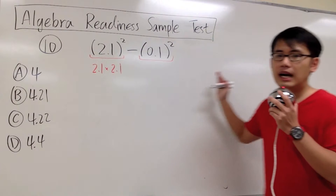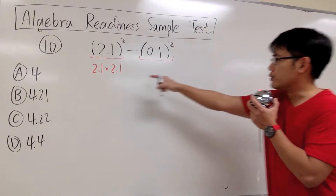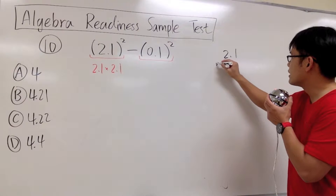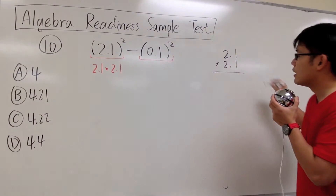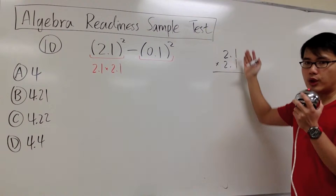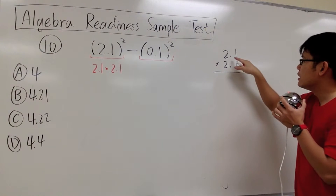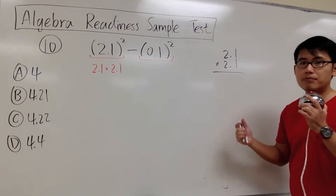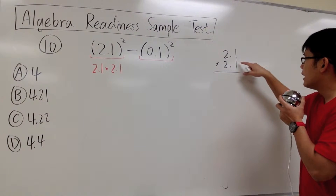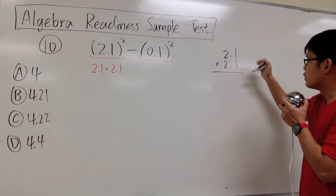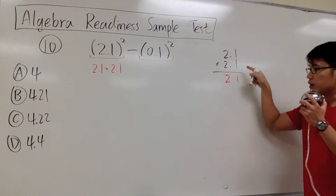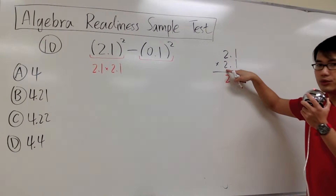Let's work this out on the side. To set this up, I will write it down vertically: 2.1 times 2.1. Technically, I had to line up the numbers all the way to the right — it just happened that it also lines up the decimal point. But we don't need to line up the decimal point when we multiply. Anyway, we go ahead and multiply. 1 times 1 will be 1. 1 times 2 will give us 2. And when we are done with this 1, now we move to this 2.